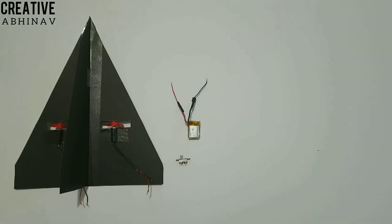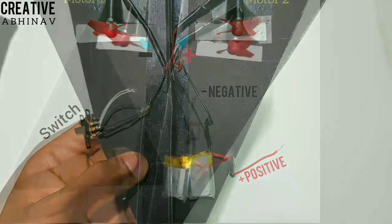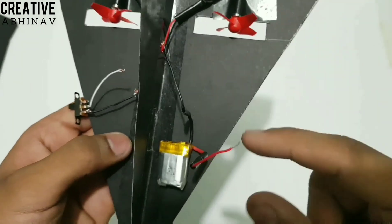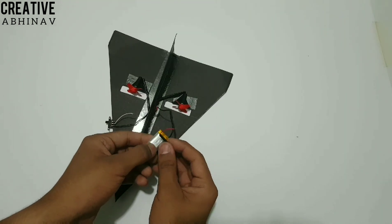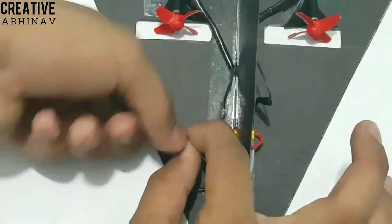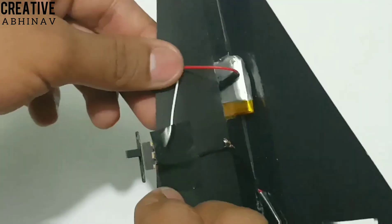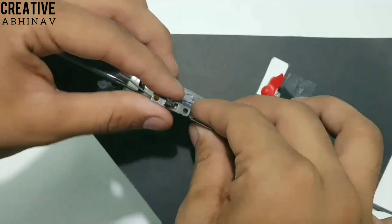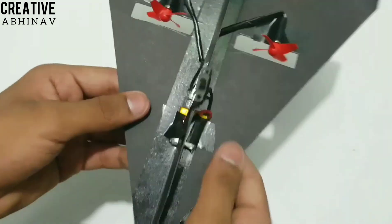Then we have to connect the motor, switch, and lipo battery like this. Then we have to paste the lipo battery and switch on our paper airplane like this.